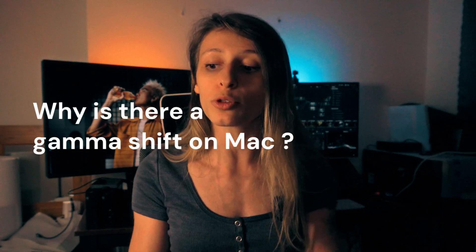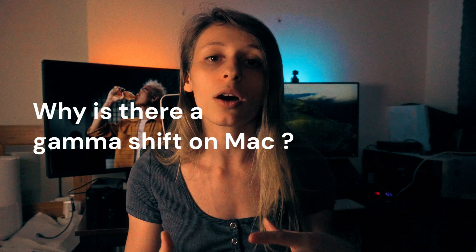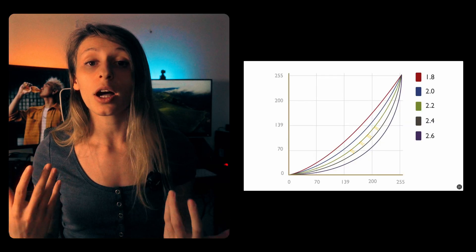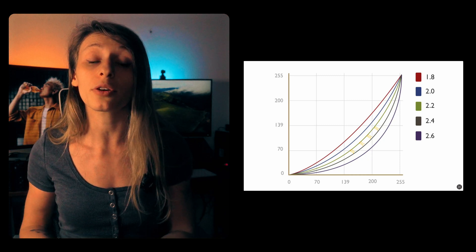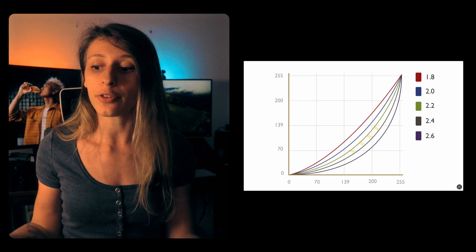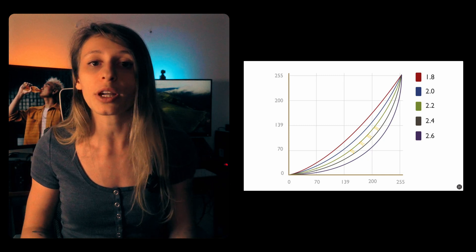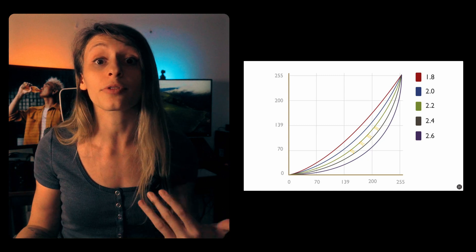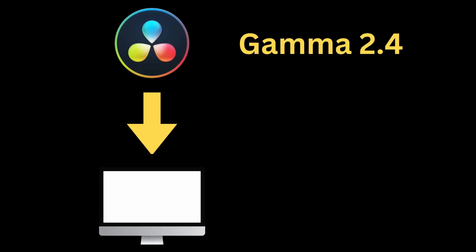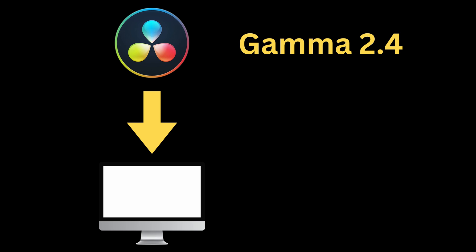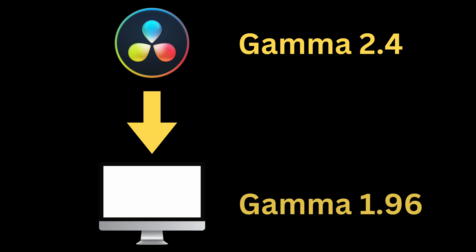Now that we've covered gamma, it's good to understand why colors are shifting on a Mac. First, if you are outputting in Rec.709 Gamma 2.4 and watching your video on a device other than a TV — like a laptop or phone — you will get a lifted-contrast feeling anyway, because it needs to fit the gamma curve of 2.2. But Macs have another very particular way to deal with color: the video out of DaVinci is not played as Rec.709 Gamma 2.2 as a regular laptop would. Instead, the video is displayed using a non-standard gamma value of 1.96, which is very close to 2.0.